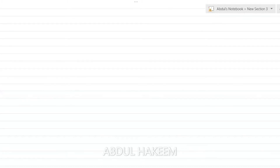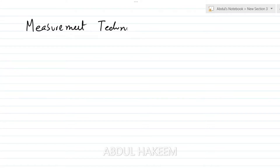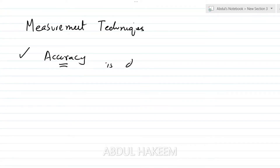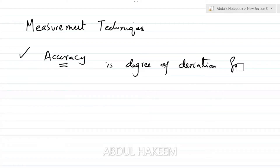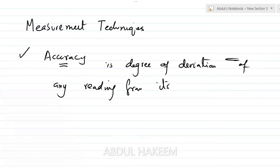The chapter is Measurement Technique, and the topic is Accuracy. Accuracy is the degree of deviation of any reading from its true value.